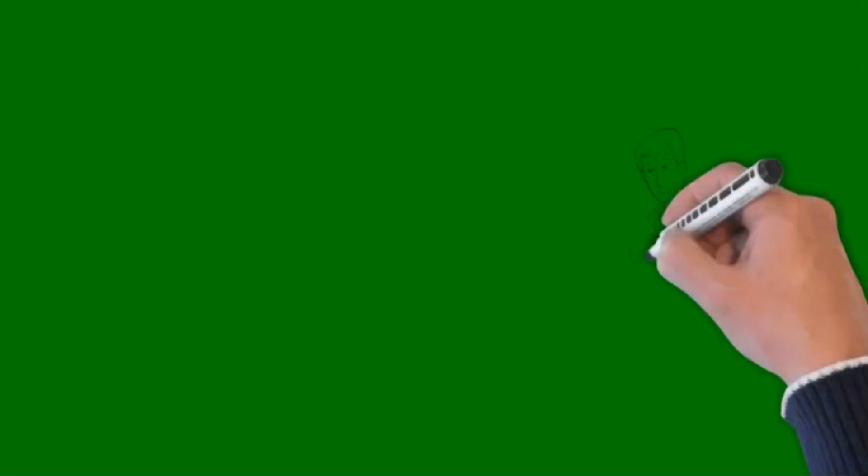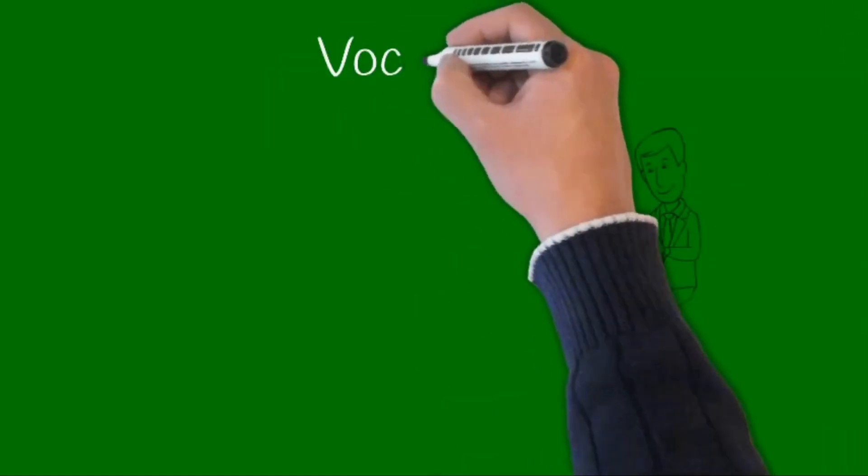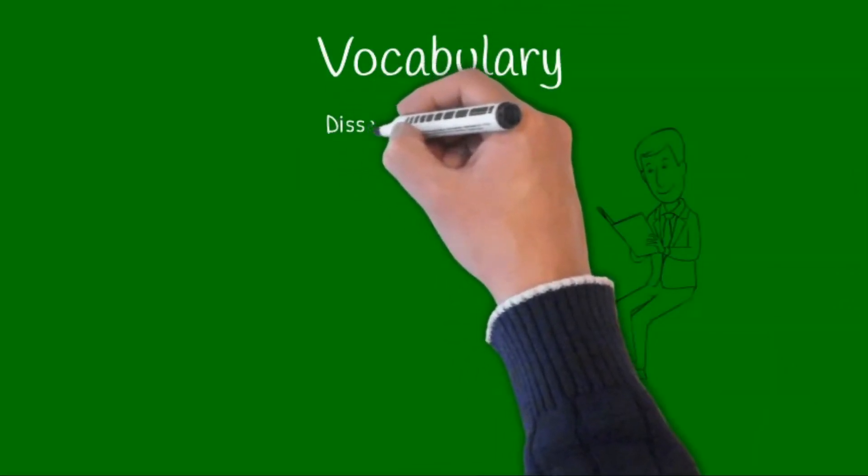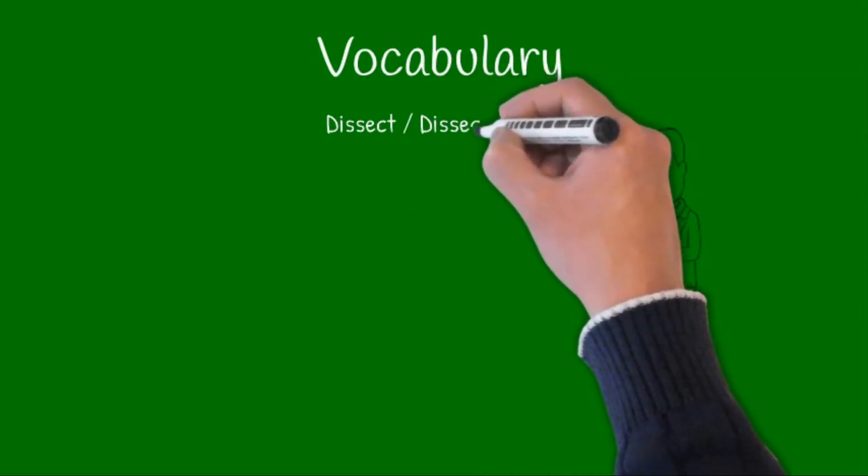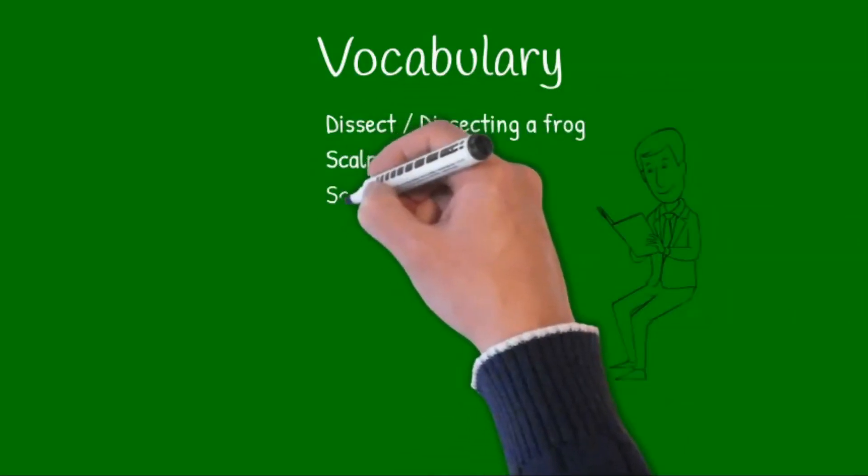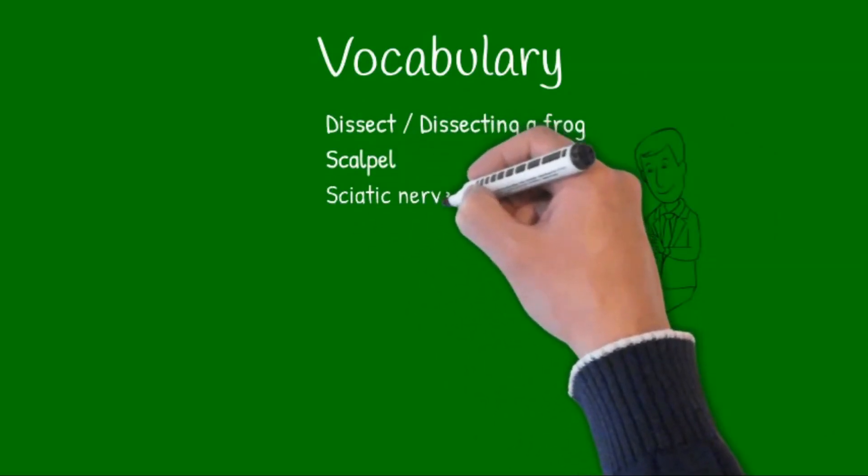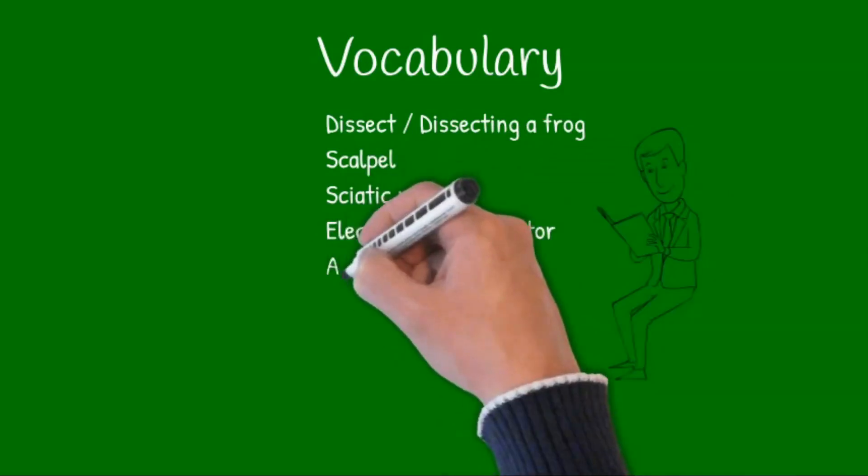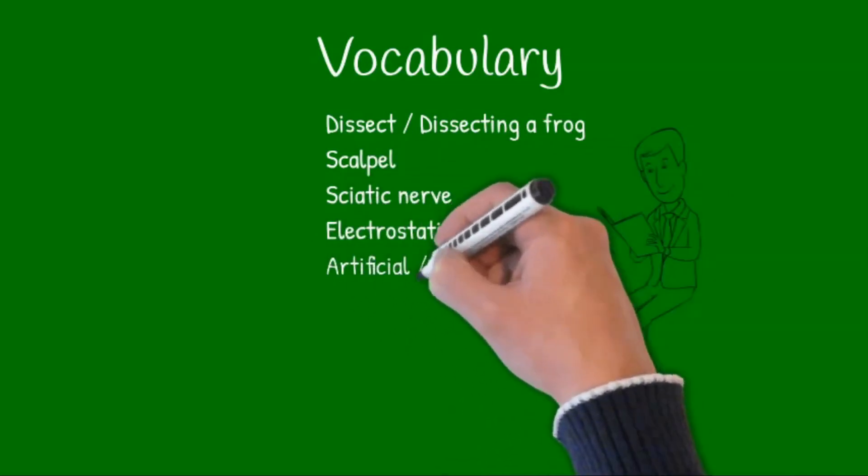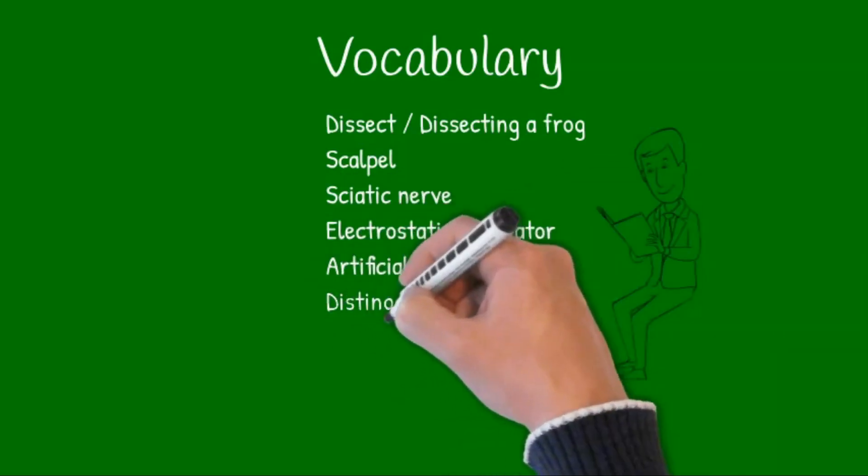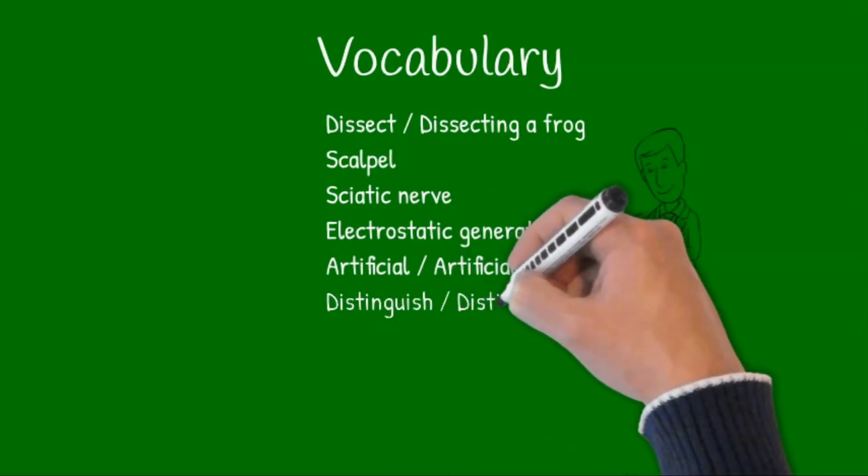So for the vocabulary section, we practice these following words. Dissect. Dissecting a frog. Scalpel. Not scalpel. Scalpel. Sciatic nerve.